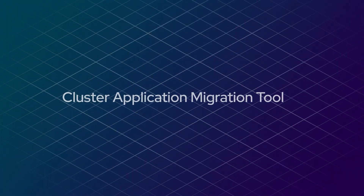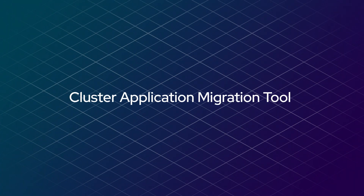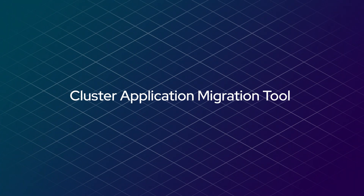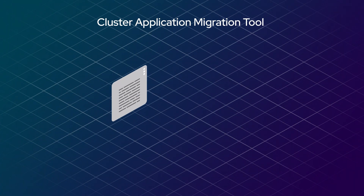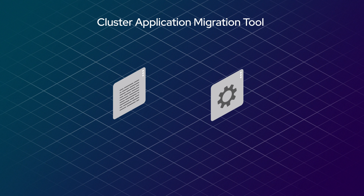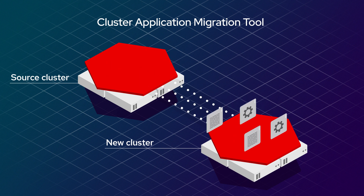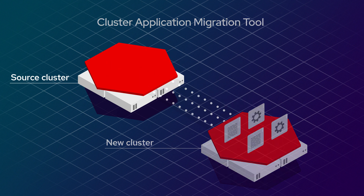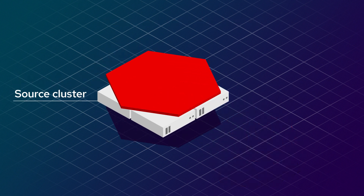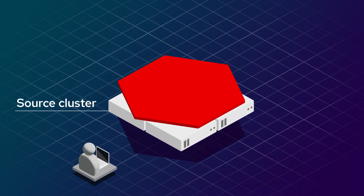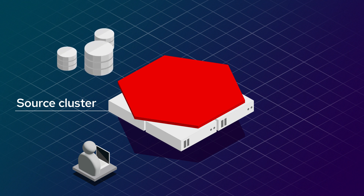Next you'll create a migration plan. Red Hat's Cluster Application Migration tool can migrate both stateful and stateless applications from the source cluster to the new cluster. Select the source cluster and namespaces you want to migrate and choose how to handle persistent volumes.